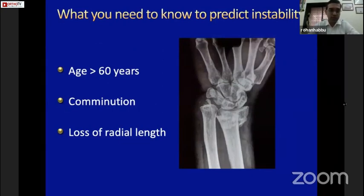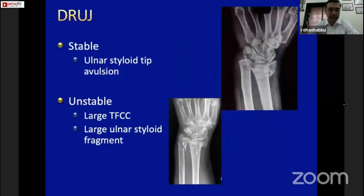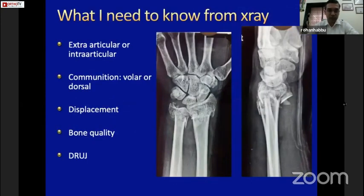There are many predictors of instability in distal radius fractures. The three most important are: age greater than 60 years, comminution — volar, dorsal, or both — combined with DRUJ injury, and loss of radial height at the index or primary X-ray. A major DRUJ injury will also cause significant instability; these fractures typically cannot be managed with plaster alone and need to be fixed. When reviewing a wrist injury X-ray, you need to know: is it extra-articular or intra-articular? Is there comminution volarly, dorsally, or both? What is the primary displacement — that's where inclination, tilt, and radial height are important.